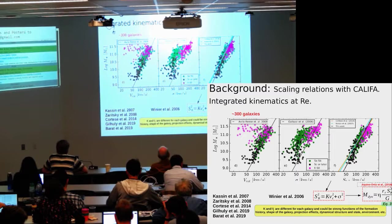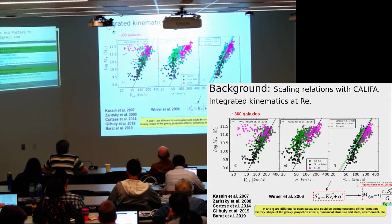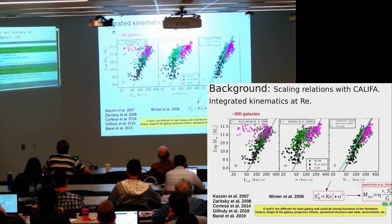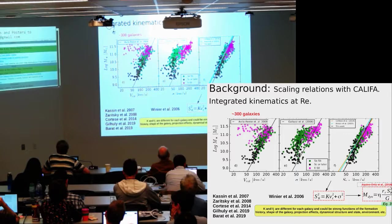The final goal of that paper was to unify all types of galaxies in a single scaling relation. We used the kinematic parameter introduced by Weiner and collaborators in 2006, defined by an equation that combines the contribution of ordered motions given by the rotation velocity and also the contribution of disordered motions given by the velocity dispersion. Here, K is a constant, generally assumed equal to 0.5.